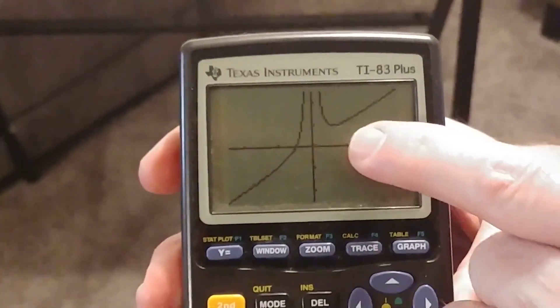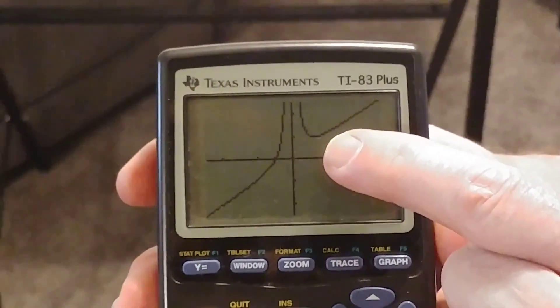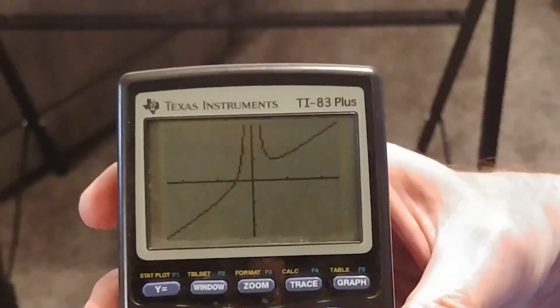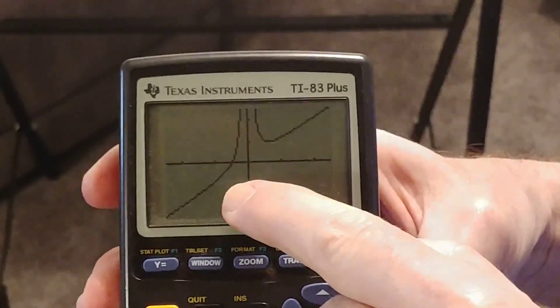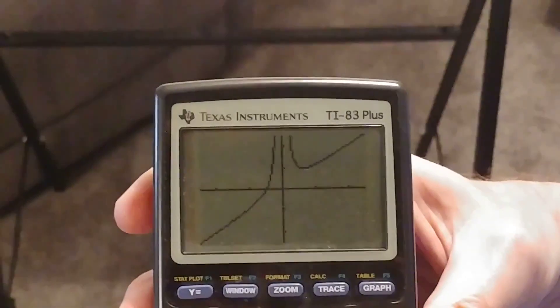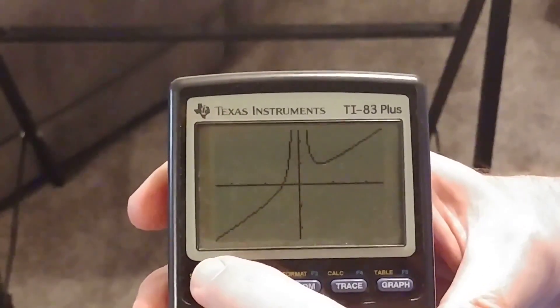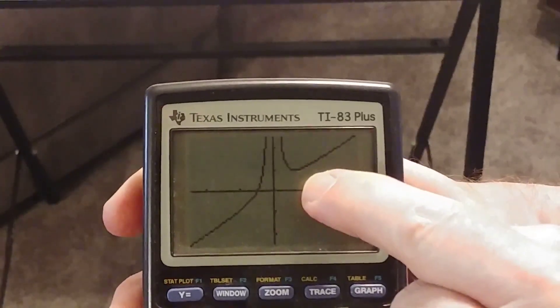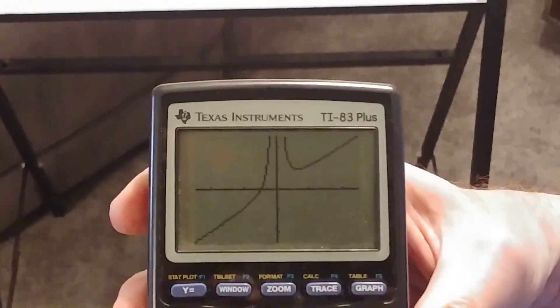And lo and behold there is a minimum when x is positive. I was saying earlier that I expect x to be negative and sure enough if x is negative the graph does go down to negative infinity, but that's not a real value. So sure enough there's the minimum point where x is a positive number.